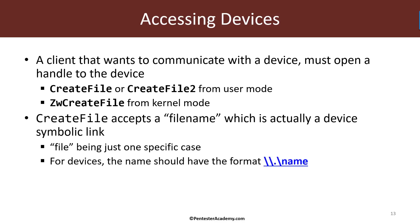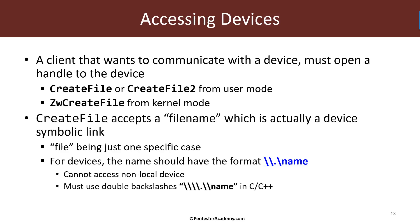For devices, we have to provide CreateFile with a special format so that it's recognized as a device name rather than a filename. That format uses two backslashes, then a dot, another backslash, and the name of the symbolic link. You may recognize this as the Universal Naming Convention (UNC), where the dot means we're talking about the local machine. You cannot access a device on another machine directly — that only works for true files in a file system. In C or C++, we need double backslashes for each backslash because of string escaping.